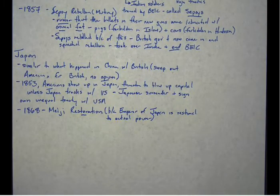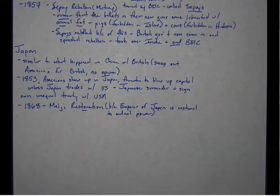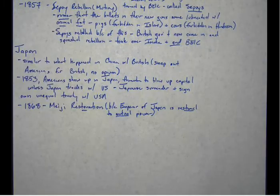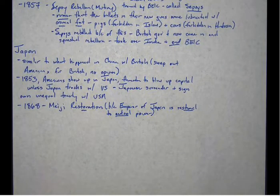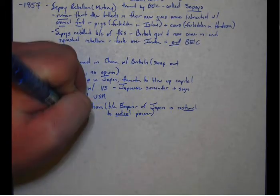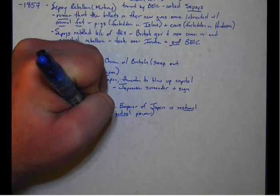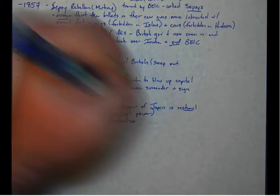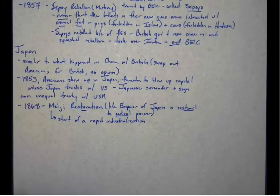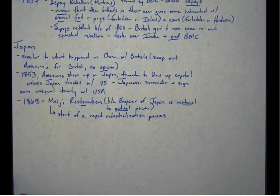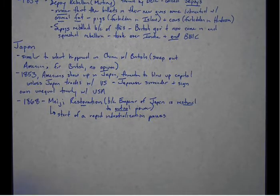The Meiji Restoration is called a restoration because the Emperor of Japan is restored to actual power. He was always around, but he didn't really have any power. So what the Meiji Restoration does is it restores the Emperor to actually being in charge. But for us, the Meiji Restoration is the start of a rapid industrialization process.